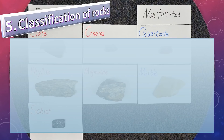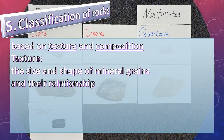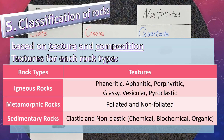Classification of rocks is based on texture and composition. Texture is the size and shape of mineral grains and their relationship. For igneous rocks, we have six textures: phaneritic, aphanitic, porphyritic, glassy, vesicular, and pyroclastic. For metamorphic rocks, we have foliated and non-foliated. For sedimentary rocks, we have clastic and non-clastic, which contains chemical, biochemical, and organic.